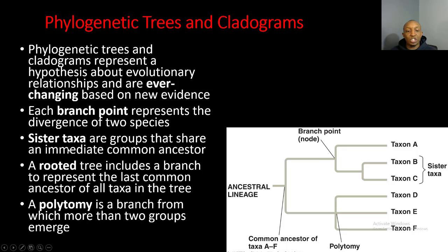Sister taxa are groups that share an immediate common ancestor. For example, taxon B and taxon C have an immediate common ancestor located at this point right here. A rooted tree includes a branch to represent the last common ancestor of all taxa in the tree.